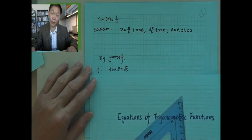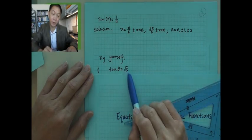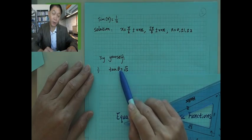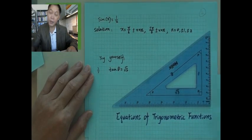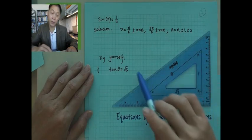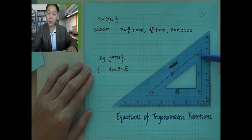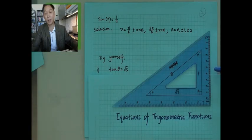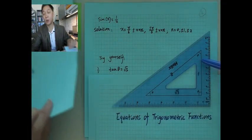You may try this one yourself. This one is tangent theta equals radical 3 — what is the solution for theta? Again, use the ruler to help you. Tangent is opposite side over adjacent, so radical 3 over 1 gives you radical 3. So theta is 60 degrees, or pi over 3. Pi is 180 divided by 3, which gives 60. So you have at least one solution, combining the ruler and the special angles.